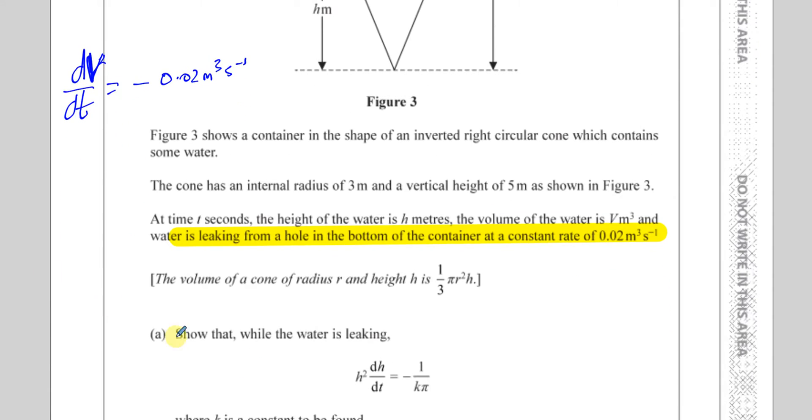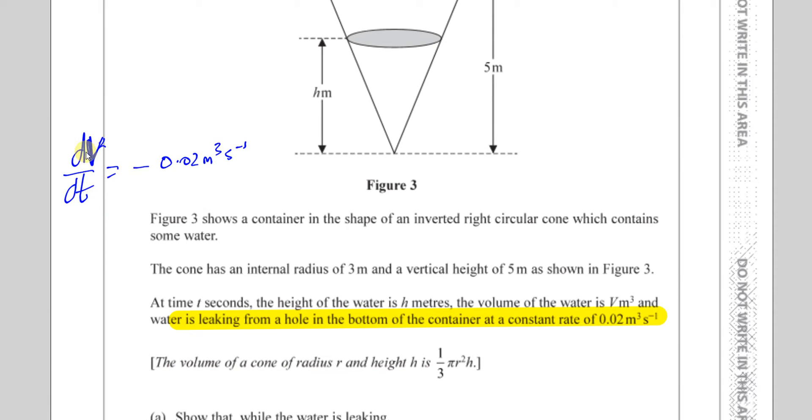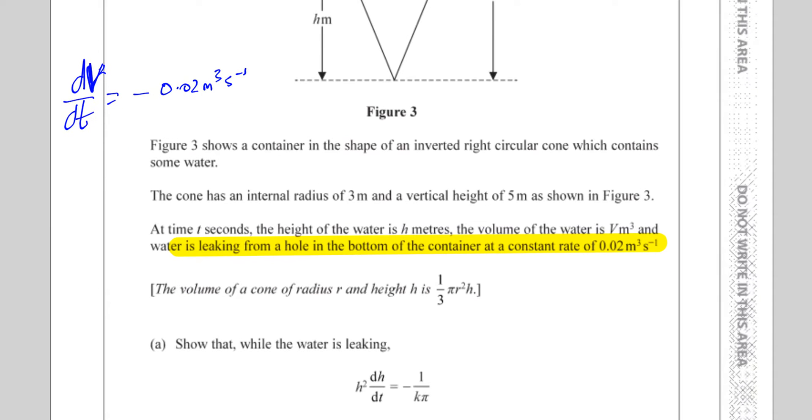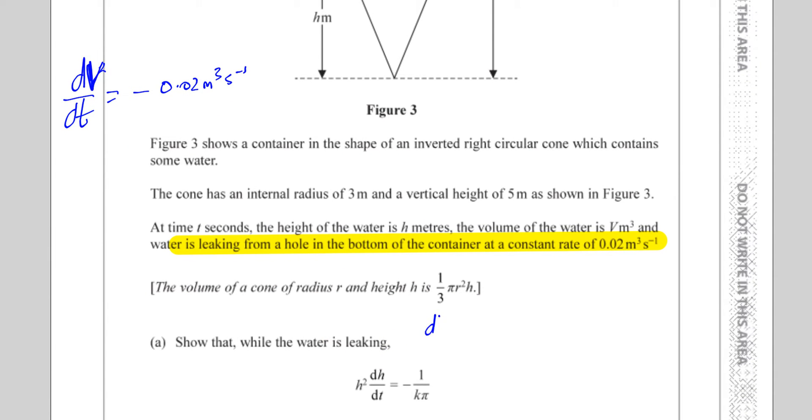It says show that while the water is leaking, h squared times dh/dt equals minus 1 over kπ. So we've got to basically find an expression for dh/dt, the rate of change of the height with respect to time. And what we have is dV/dt. So how do you go from, how do you make dh/dt? Now we're going to use a chain rule. We have to multiply it by something which will leave us with dh/dt. So you have to have a dh on the top, and that will give you dh over dt.